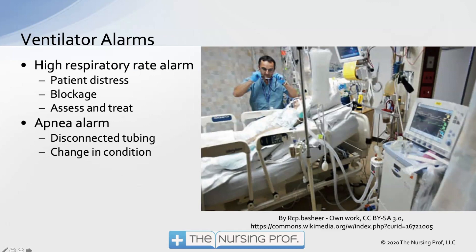The high respiratory rate alarm — take a look and see if the patient is in distress. A high respiratory rate could indicate an acute event such as a pulmonary embolism or a change in condition. It could also be caused by water in the tubing or a partial blockage in the endotracheal tube, such as secretions causing a bubbling effect. Assess and treat your patient.